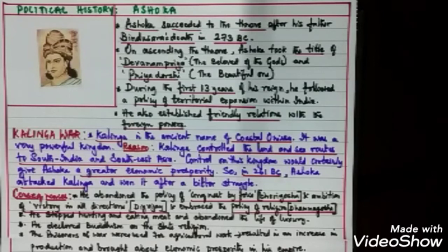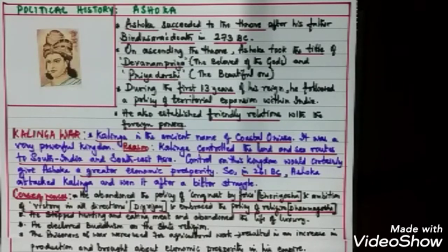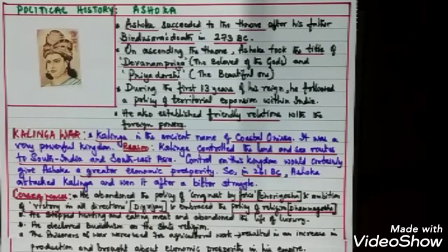With his huge and powerful army, Ashoka defeated Kalinga very badly. This left a bitter impression in the life of Ashoka and proved to be a turning point in his life. Now let us find out what were the consequences of the Kalinga War.